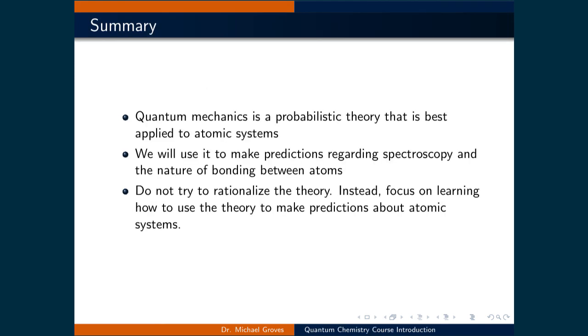To summarize, quantum mechanics is a probabilistic theory that is most successfully applied to atomic systems. We will use it to make predictions regarding spectroscopy and the nature of bonding between atoms. And finally, do not try to rationalize the theory. Instead, focus more on learning how to use the theory to make predictions about atomic systems.